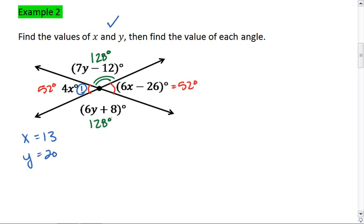So once I plug in my values for one angle, it becomes very easy to find the measures of the remaining angles. And you can always double check this by substituting your values in. For example, I could substitute y for 6y plus 8. I get 6 times 20 plus 8, 120 plus 8, 128, which is the same as the number in green on your screen.